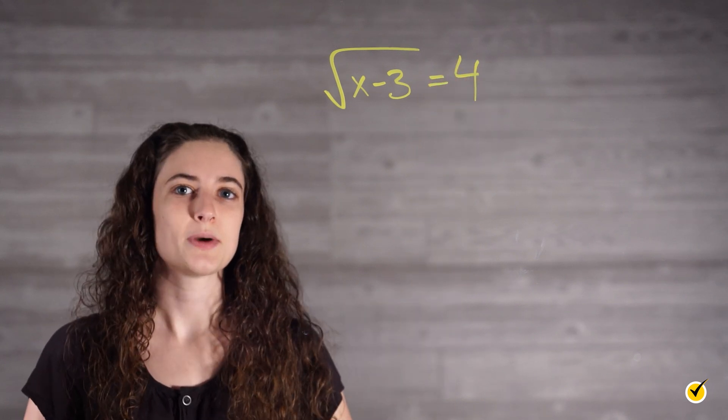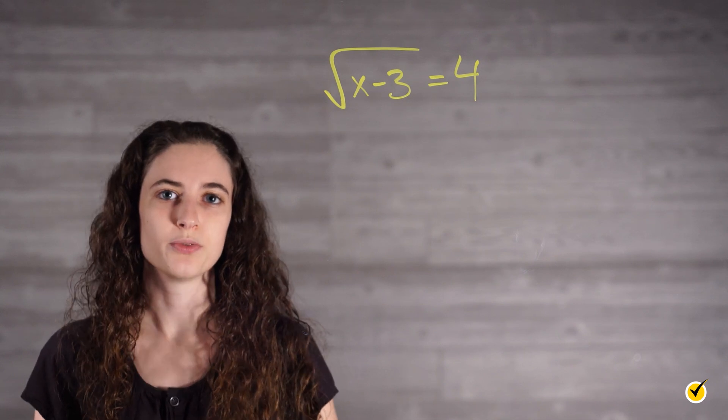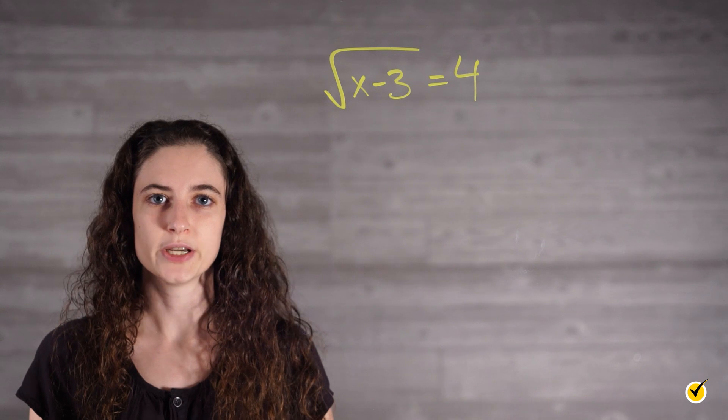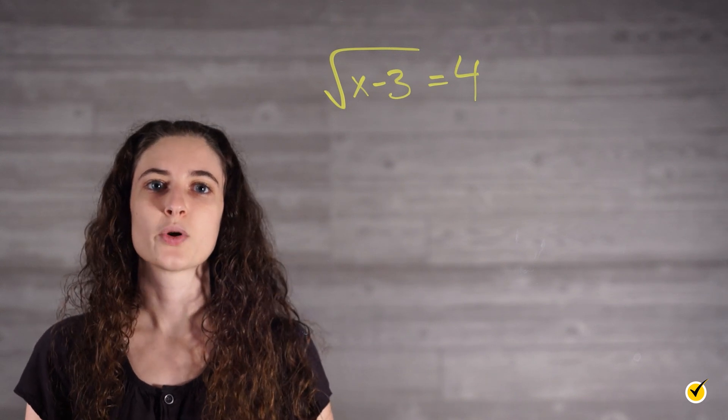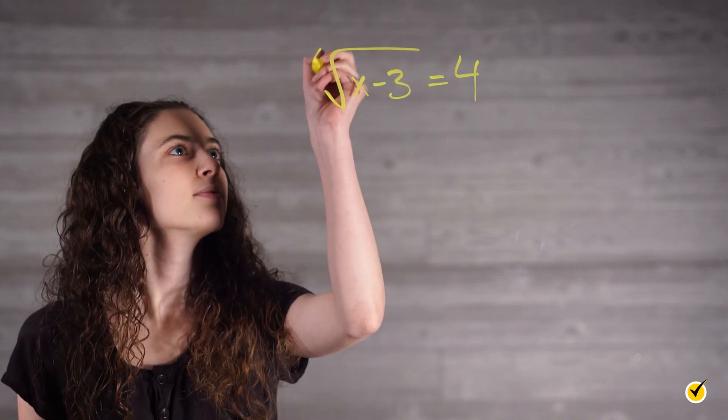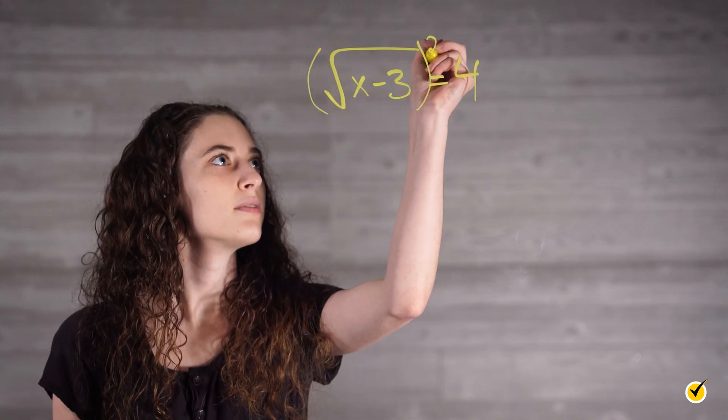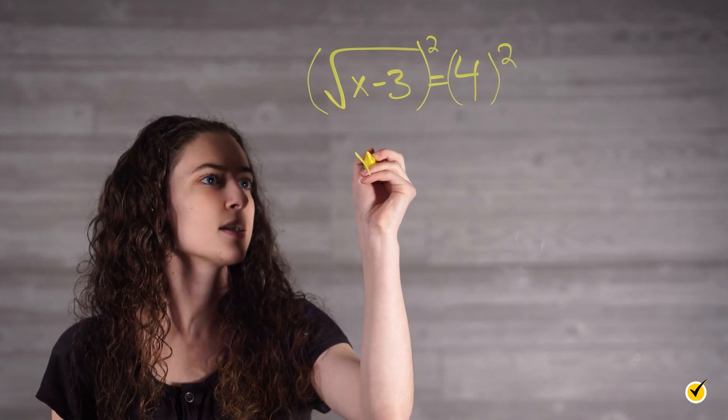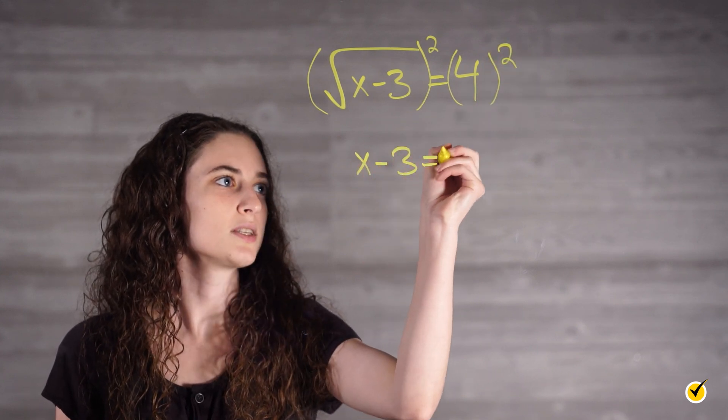The first thing we need to do to get x by itself is get rid of the square root. We do this by doing the opposite operation to both sides of the equation. The opposite of a square root is a square, so we are going to square both sides. This gives us x minus 3 is equal to 16.